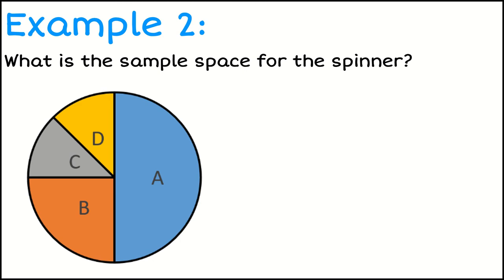What about if I have the spinner? So in this spinner, I need to think, when I spin it, what would happen? And so the sample space, the possible outcomes is: I could get an A, I could get a B, I could get a C, or I could get a D.